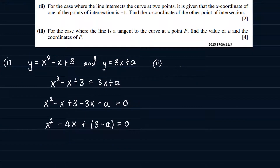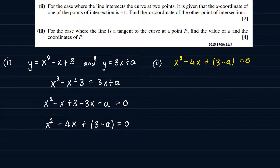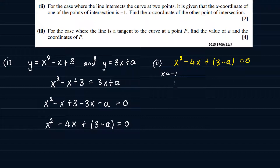To work this one out, we're going to use what we've already gotten from part 1: x squared minus 4x plus 3 minus a is equal to 0. This is the combined equation for the curve and the line. Since the x-coordinate of one of the points of intersection is minus 1, we substitute x equals minus 1 into this equation, giving us minus 1 squared minus 4 of minus 1 plus 3 minus a is equal to 0. This is going to help us find the value of a.